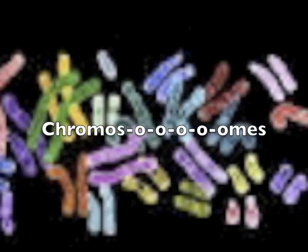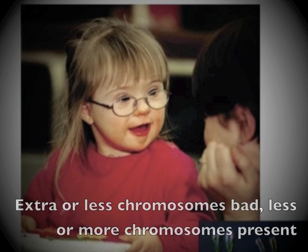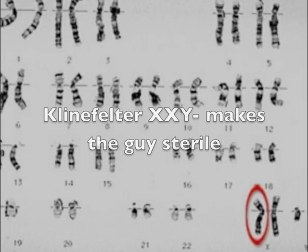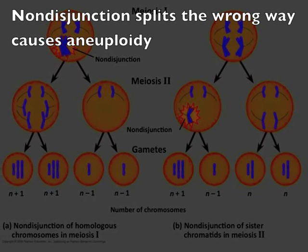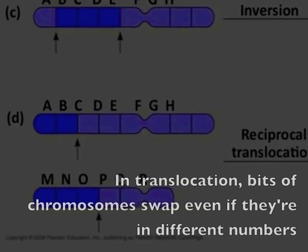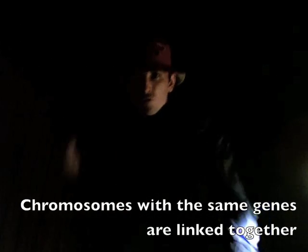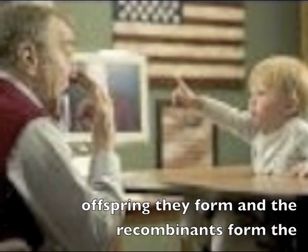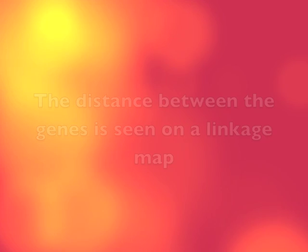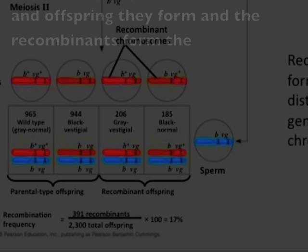Euploidy and aneuploidy: trisomy has an extra chromosome. X monosomy is bad. Having less or more chromosomes present — polyploidy makes an extra set, and it's found in plants. Klinefelter XXY makes the male sterile. Turner syndrome is X-O in a woman; needs more estrogen. Non-disjunction going the wrong way can cause damage. In translocation, chromosomes swap segments — even if they're different numbers, it can cause complications if they're not in the right spot. Chromosomes with the same genes are linked together; recombination takes place after crossing over; the parentals, offspring they form, and recombinants form the chromosomes. The distance between the genes is seen on a linkage map; map units tell frequency of recombinants; the parentals, offspring they form, and recombinants form the chromosomes.